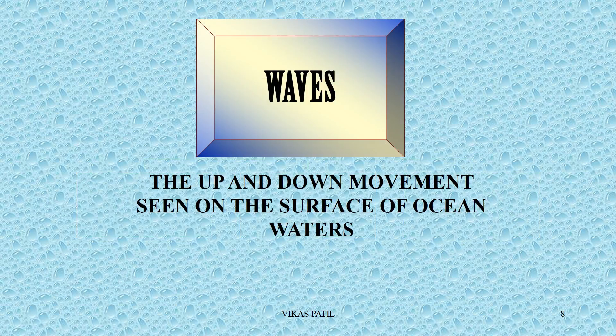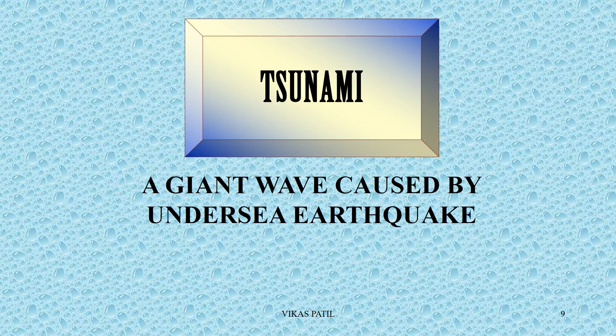The first form of movement is waves. Waves are very easy to identify. Waves are basically an up and down movement seen on the water surface. This could be created because of friction by wind or when the water moves towards the coast. As the coast depth becomes less, the waves increase in height. A giant wave caused by an underwater earthquake is known as a tsunami.